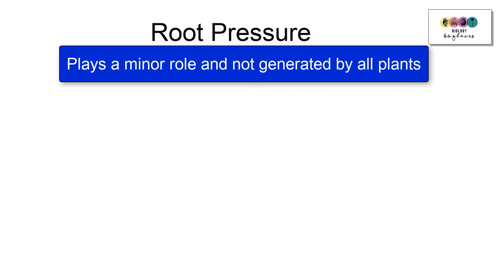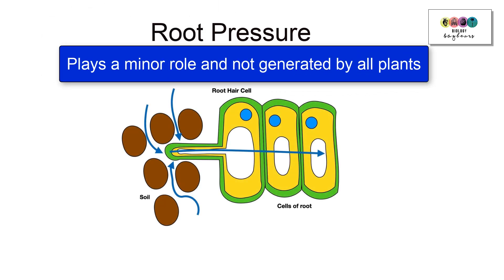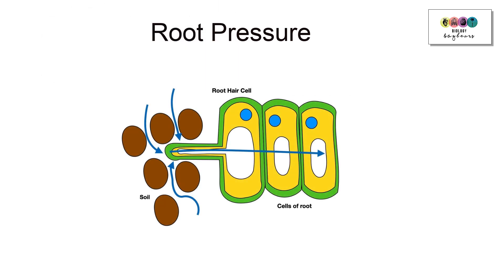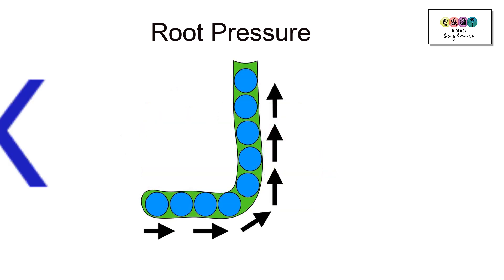Let's discuss root pressure, and bear in mind that it plays a minor role and root pressure is not generated by all plants. Water enters the root hair cell by osmosis and goes from cell to cell until eventually it makes its way to the xylem. This happens continually, so water molecules are going to be pushed upwards by the water molecules coming behind. This is root pressure.